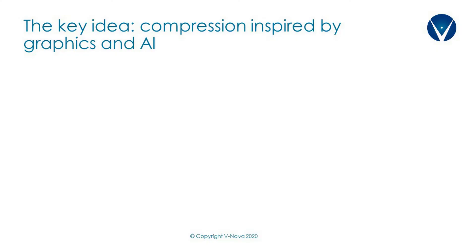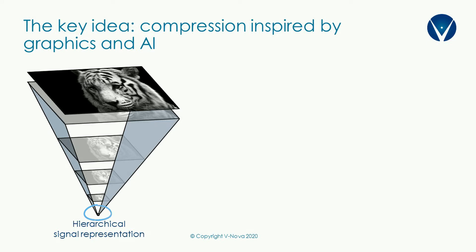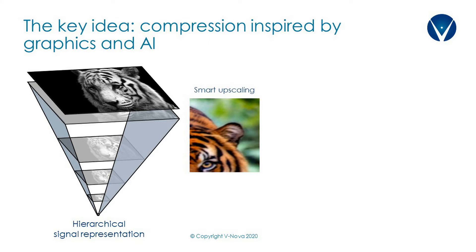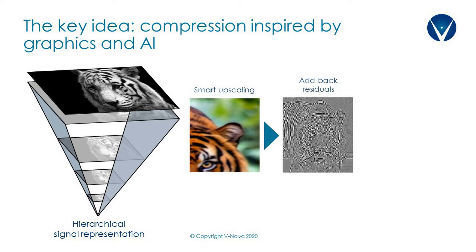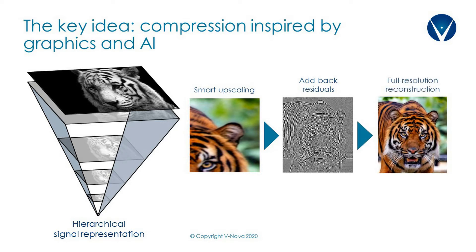A video frame can be compressed starting from the gist of it — the low resolution tip of the pyramid. Then gradually the frame is upsampled and progressively residuals are added until you achieve the perfect reconstruction. This is achieved by leveraging the hardware acceleration and the massive parallelism that is included in existing hardware.